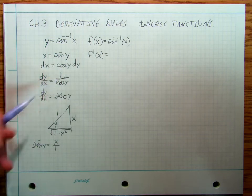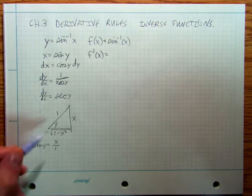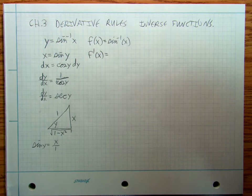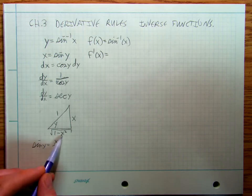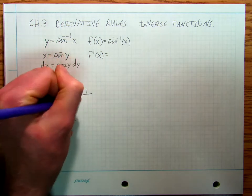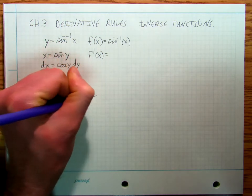Well, secant is 1 over cosine. So cosine is adjacent over hypotenuse. So this is hypotenuse over adjacent. So I'm going to write this as 1 over square root of 1 minus x squared.